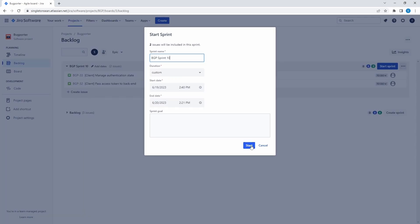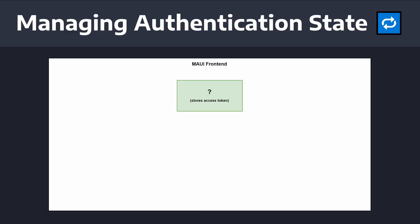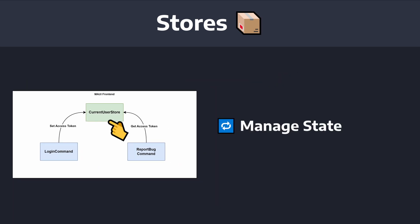We have a sprint set up, so let's go ahead and start this sprint. Step one: before we can worry about passing the access token to our backend, we need to manage authentication state and keep track of the currently logged-in user. We need to store the access token somewhere we can set it after login and retrieve it when making requests. This communication between sign-in and requests will be managed in a centralized location — and this is where we get to stores. Stores are essentially singletons that manage application state in a centralized single source of truth.